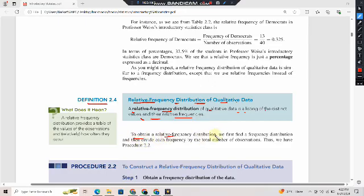To construct a relative frequency distribution, we first find a frequency distribution and then divide each frequency by the total number of observations. Thus we have Procedure 2.2. A relative frequency distribution provides a comparison of the values of the observations, showing relatively how often they occur.